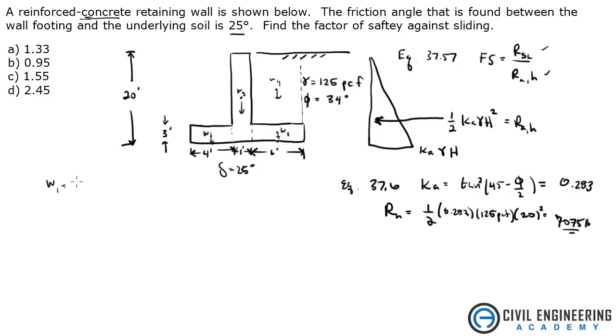Weight 1. Well, because we were given this as a concrete retaining wall, we know that the density of the concrete is 150 PCF. That's just something you should know for concrete. So we need to take that 150 PCF times 4 times 3, which is the dimensions right here of this little square. And that gives me 1800.